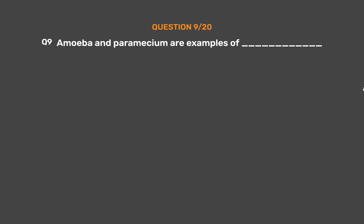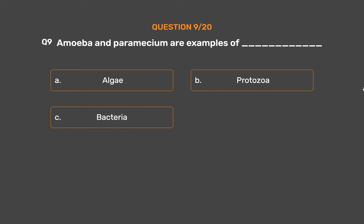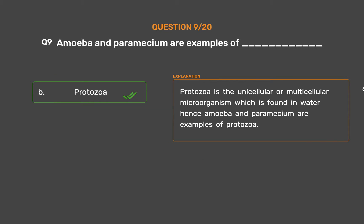Question number 9. Amoeba and Paramecium are examples of which microorganism? Option A: Algae. Option B: Protozoa. Option C: Bacteria. Option D: Fungi. The correct answer is Option B, Protozoa. Protozoa is the unicellular or multicellular microorganism found in water. Hence, Amoeba and Paramecium are examples of protozoa.